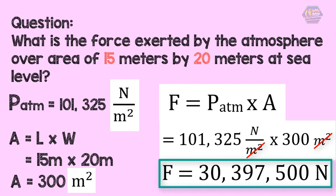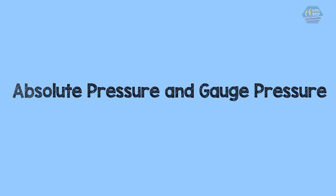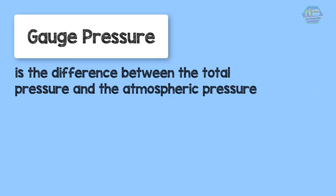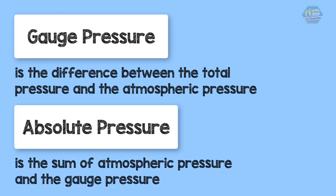Now let's discuss absolute pressure and gauge pressure. Gauge pressure is the difference between the total pressure and atmospheric pressure, while absolute pressure is the sum of atmospheric pressure and gauge pressure. From these definitions we can write the equations relating gauge pressure and absolute pressure.